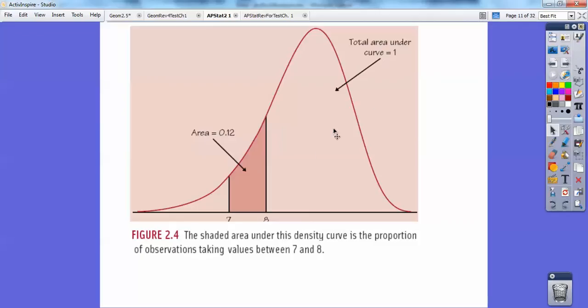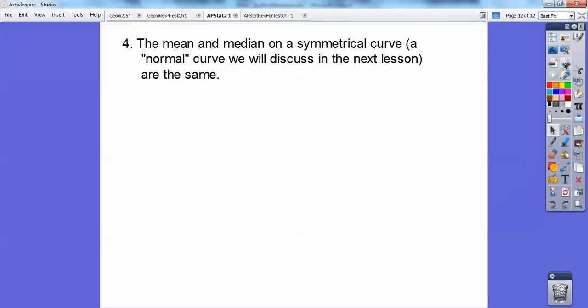So they just said, for example, the shaded area under this density curve is the proportion of observations taking values between 7 and 8, and they're saying that the proportion is 0.12. Again, we'll get the 0.12 later when we start talking about z distributions, but that's not until later.